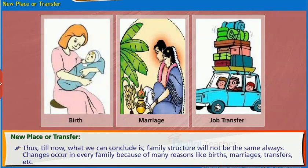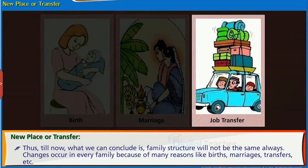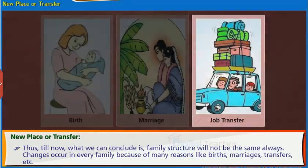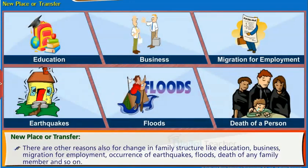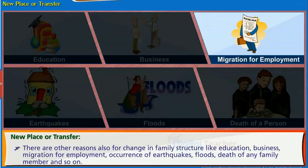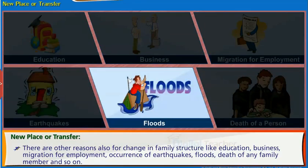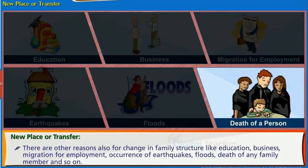Harsha's friend Vikram's father also got a promotion and was transferred to another town. However, unlike Harsha's father, Vikram's father didn't relocate his entire family but instead started travelling to and fro. Thus, family structure will not be the same always. Changes occur in every family because of many reasons like births, marriages, and transfers. There are other reasons also, such as education, business, migration for employment, occurrence of earthquakes, floods, and death of any family member.